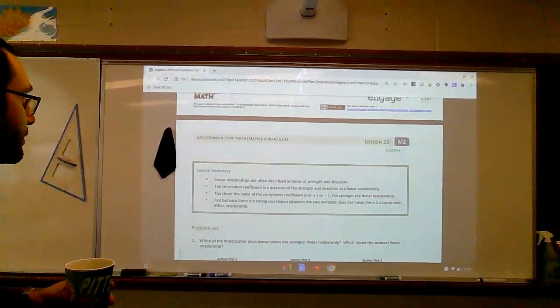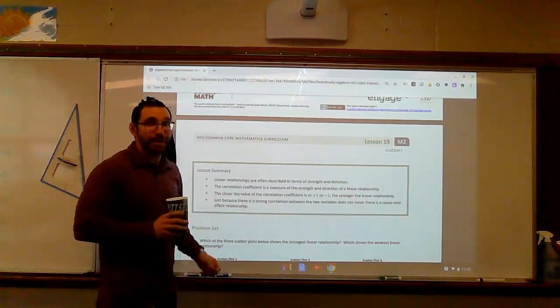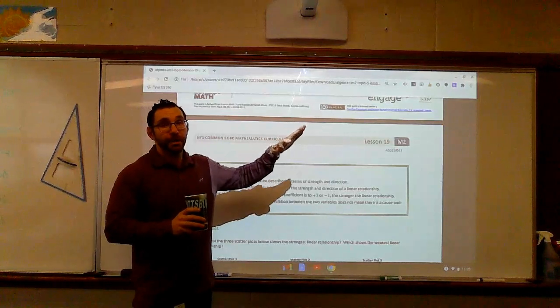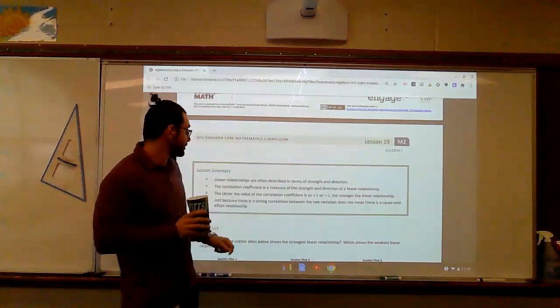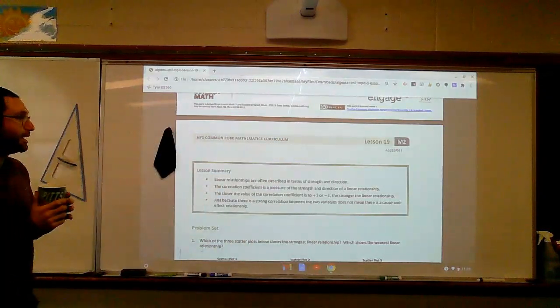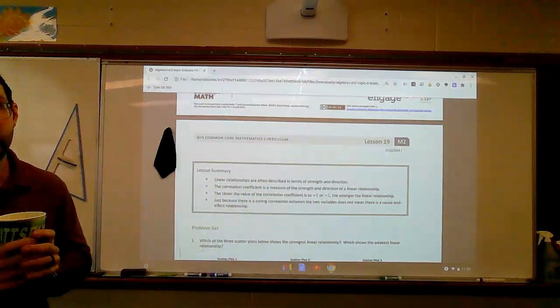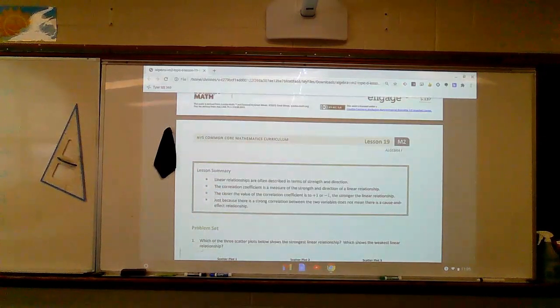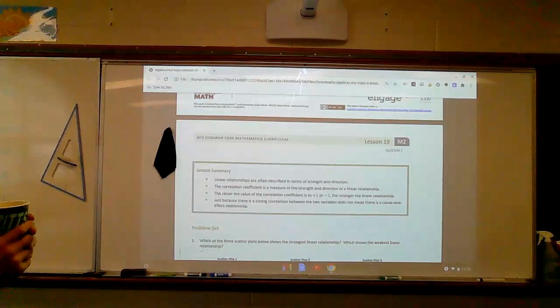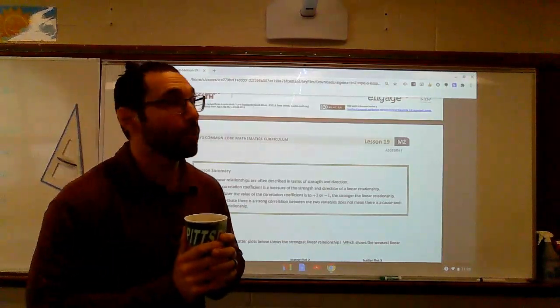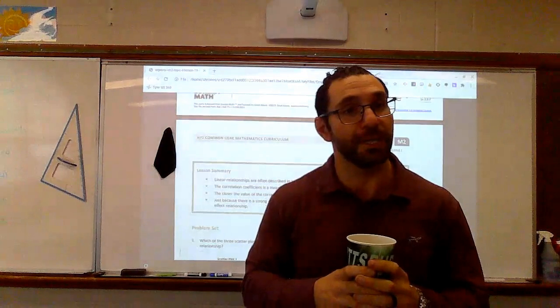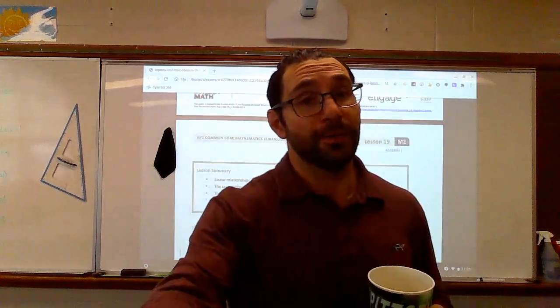But this is what I want. Linear relationships are often described in terms of strength and direction. Direction being positive, direction being negative. The correlation coefficient tells me whether it's a good linear relationship or not. The closer to positive one or negative one, the stronger it is. Listen, guys, we are done with module two. We've done a lot of linear stuff. I can't wait to move on. You have a test coming up.